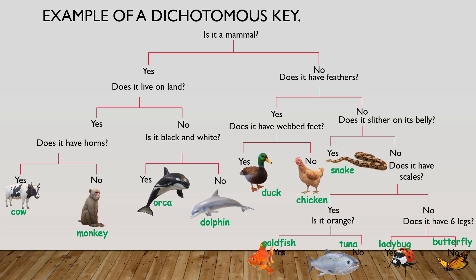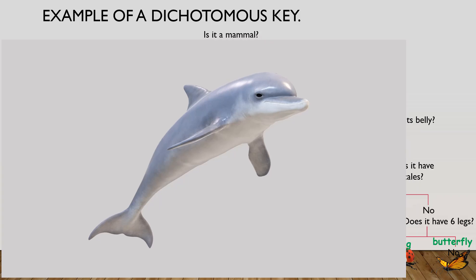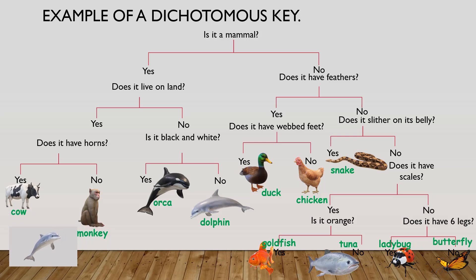The next step is to show you how you could use your key. Your instructor comes to you and hands you an unknown animal and asks you to identify it. Now, I know some of you are saying you know what a dolphin looks like and don't need a key — but this is just an example. Keep in mind that this key will only help you identify one of the 11 animals presented. If your instructor handed you an unknown animal that is not part of this key, there's no way you could possibly identify it.